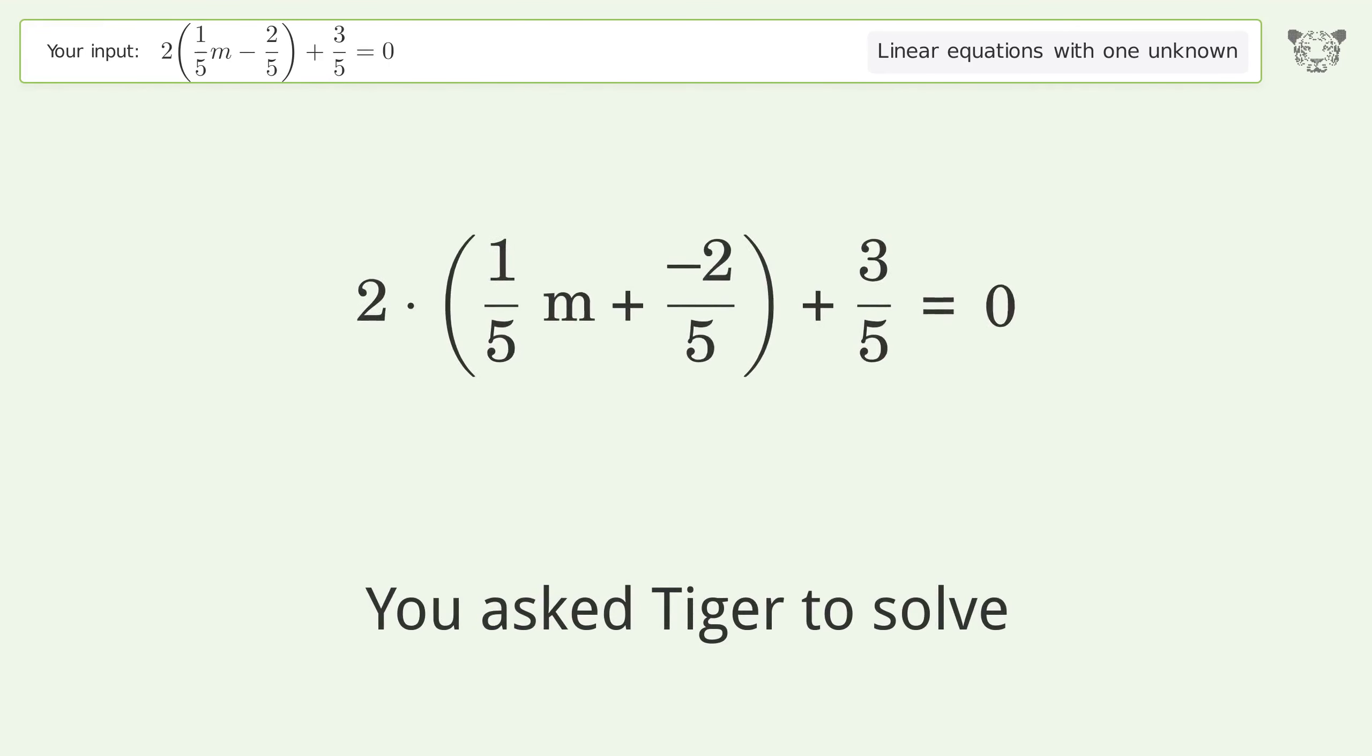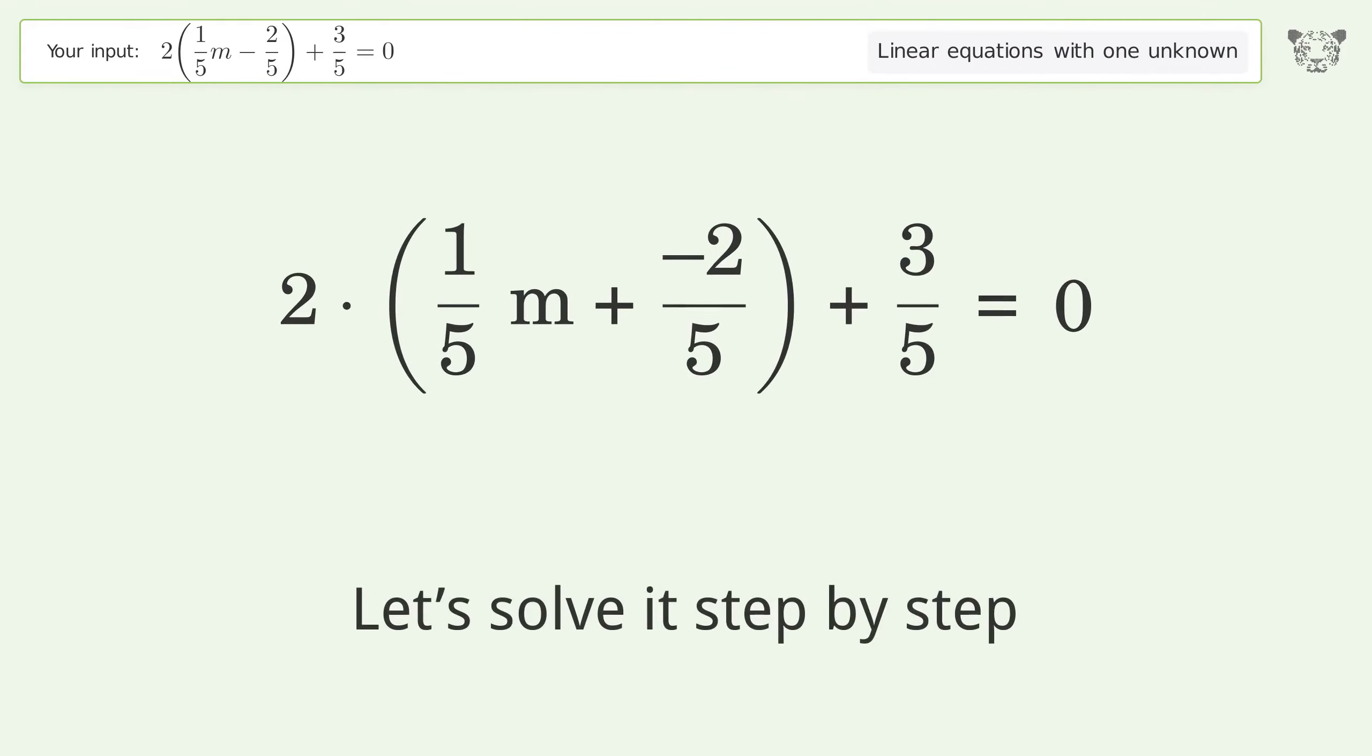You ask Tiger to solve this. This deals with linear equations with one unknown. The final result is m equals 1 over 2. Let's solve it step by step. Simplify the expression, expand the parentheses.